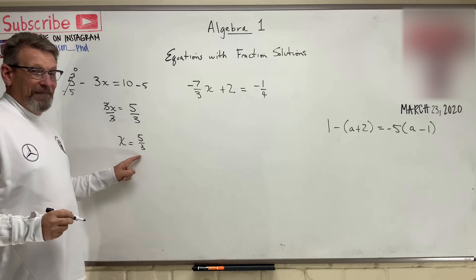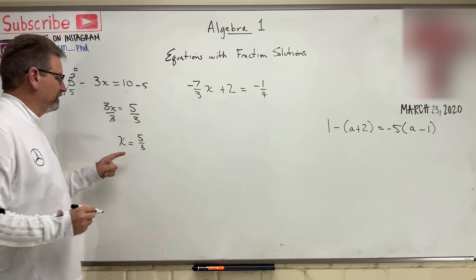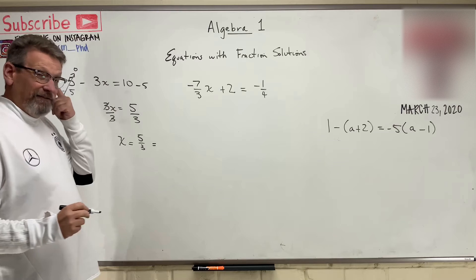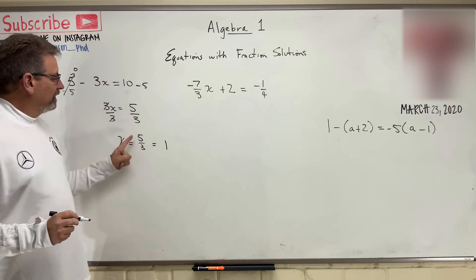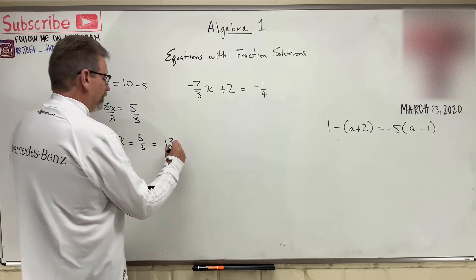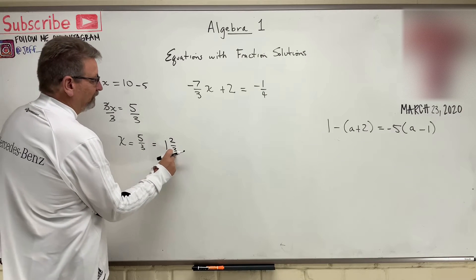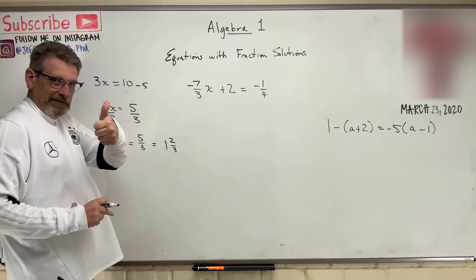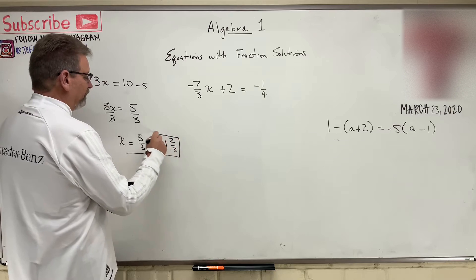Now, can you turn that into a mixed fraction? How many times does three go into five? One time. And how much remainder does that have? If you take three off of five, that leaves two. You can check yourself — that guy times that guy is three, plus that guy is five. Yep, that's right. So either one of those answers would be an acceptable answer.